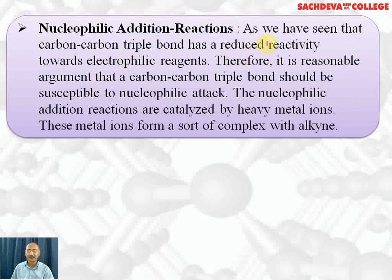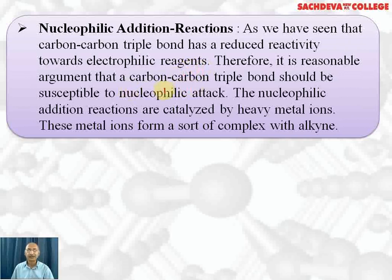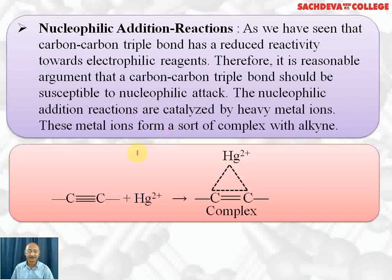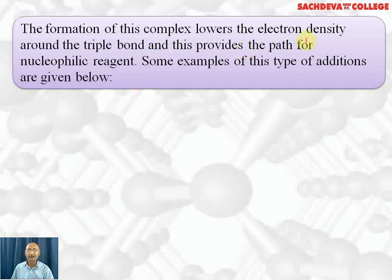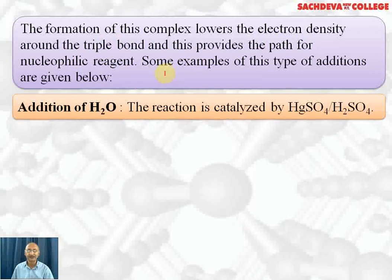Next, we consider nucleophilic addition reactions. The carbon-carbon triple bond has reduced reactivity toward electrophilic reagents because the sp-hybridized carbon holds the pi electrons tightly. Therefore, the triple bond is susceptible to nucleophilic attack and should undergo it more readily. These nucleophilic addition reactions are catalyzed by heavy metal ions, which form a complex with the alkyne. The formation of this complex lowers the electron density around the triple bond and provides a pathway for the nucleophilic reagent.